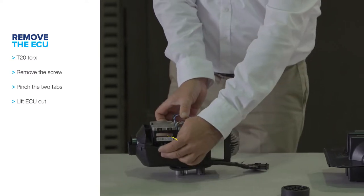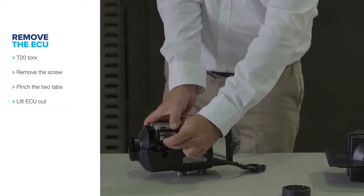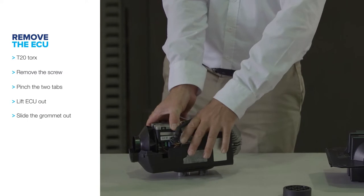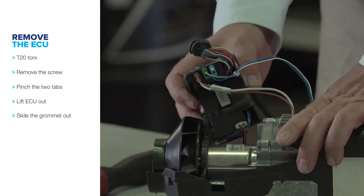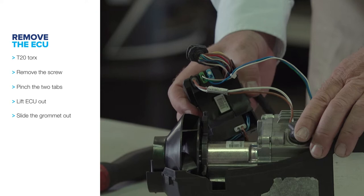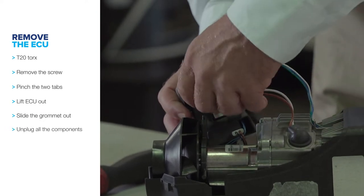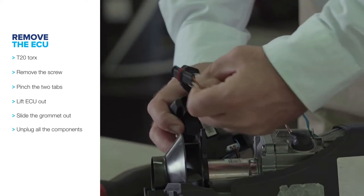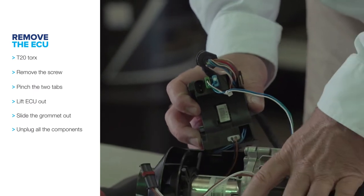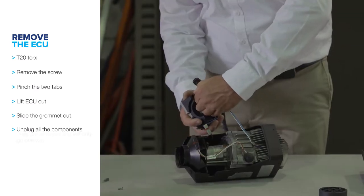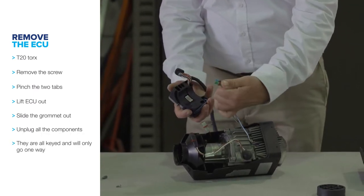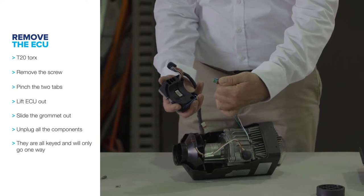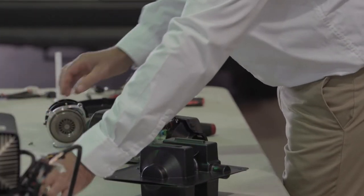There's a grommet on the side, slide that grommet out. When you rotate your ECU over, you can unplug all the components from the ECU. These are all keyed and they only go one way. Set your ECU aside.